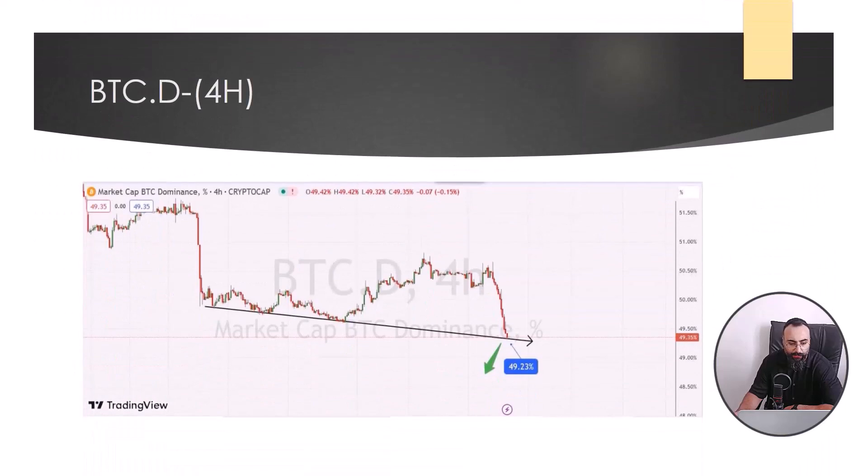And in the four hours timeframe of Bitcoin dominance, with the breaching of the support line in the range of 49.23%, there is an expectation of a drop in the index to the range of 48.40%. If the 49.80% range is broken from above, the above analysis will be violated.